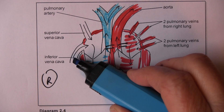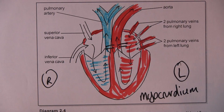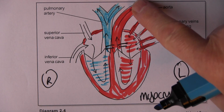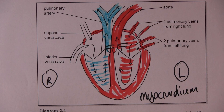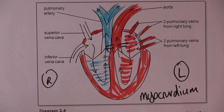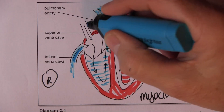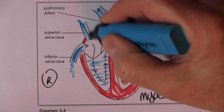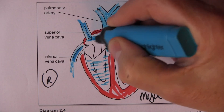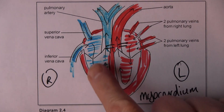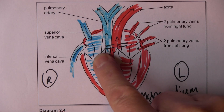The superior vena cava drains the top half of the body and the inferior vena cava drains the bottom half. The blood started off as bright red in the aorta, but as it goes through the tissues it gives up oxygen to them, collects the waste carbon dioxide generated by metabolism, and comes back to the right side of the heart as relatively deoxygenated blood.